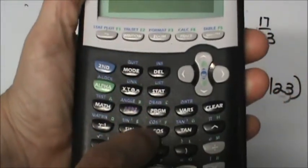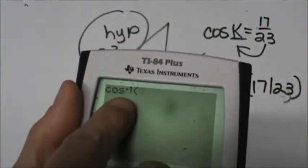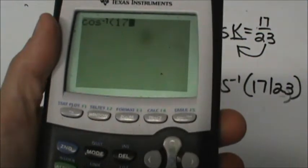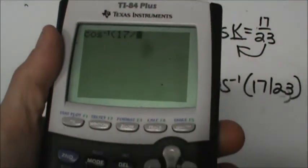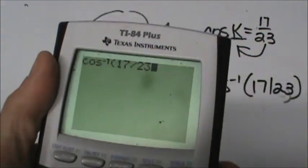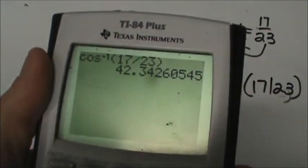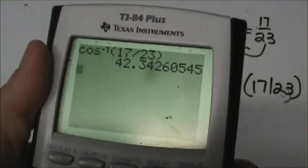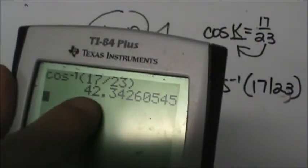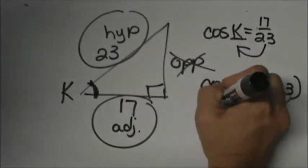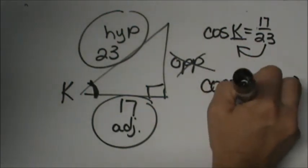Second function cosine, cosine to the negative 1, make sure that's in there, of 17 divided by 23, close, equal. So my angle measure at K is 42.3 so I'll round it to the closest degree which is 42 degrees. So angle K is 42.